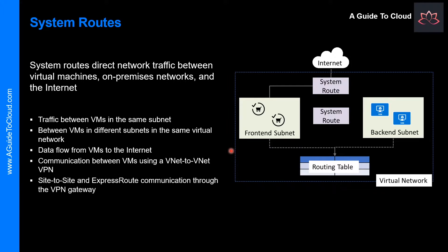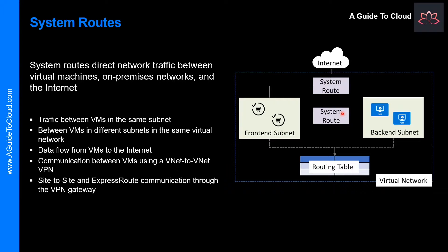For example, consider a virtual network with two subnets. The communication between the subnets and from the frontend to the Internet are all managed by Azure using the default System Routes. Please note that the information about System Routes is recorded in the Routes table. A Routes table contains a set of rules called Routes that specifies how packets should be routed in a virtual network. Routes tables are associated to subnets, and each packet leaving a subnet is handled based on the associated Routes table.